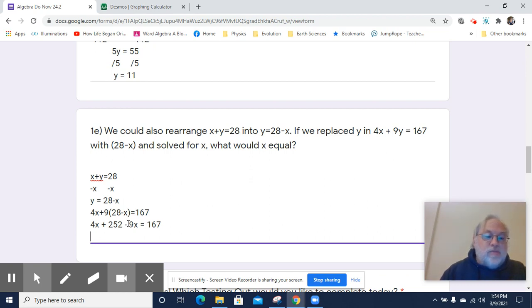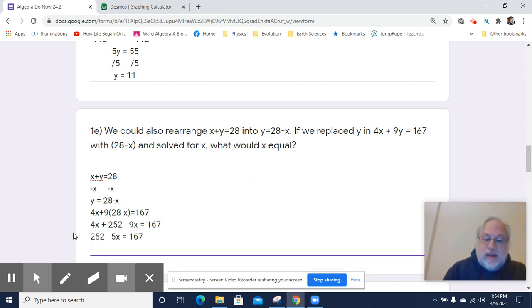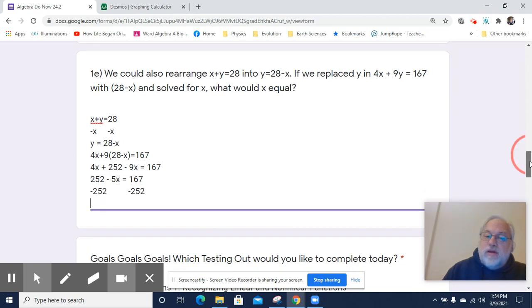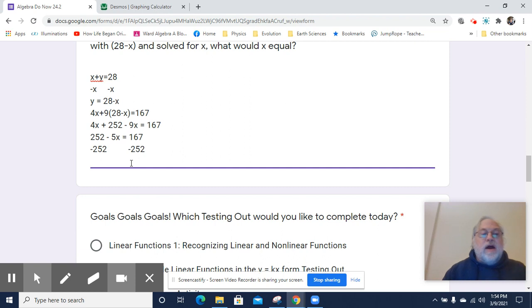So I'm going to combine my like terms, 4X and negative 9X. That'll get me a negative 5X. So I've got 252 minus 5X equals 167. Now I've got to subtract 252 from both sides. And, you know, when you're subtracting a larger number from a smaller number, it's useful to just treat it as subtracting 252 minus 167, and then it's negative. So I know I'm going to have a negative answer. So let me first drop in the negative 5X. And let's see. 2 minus 7. So I'm going to put in a negative. Keep track of that.